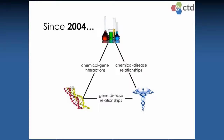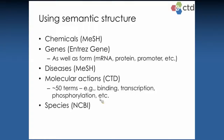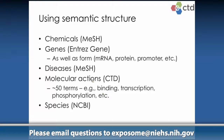We looked at the literature and focused on interactions between chemicals and genes or proteins. When I refer to genes in this talk, I'm also talking about proteins and various forms of the gene — we don't discriminate on that level. We were also interested in gene-disease relationships and chemical-disease relationships, and seeing where the data for these binary relationships fell. If we could pull out these binary relationships, which were really the focus of individual papers, we could connect aspects that were maybe studied in isolation but potentially related.